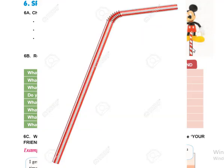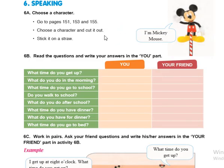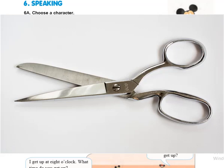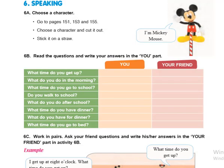You are seeing a straw — I'm going to put a picture of a straw on the screen. See, this is a straw. And how do we cut it out? We use scissors. See, this is a picture of scissors. Perfect. Now let's go to page 151.